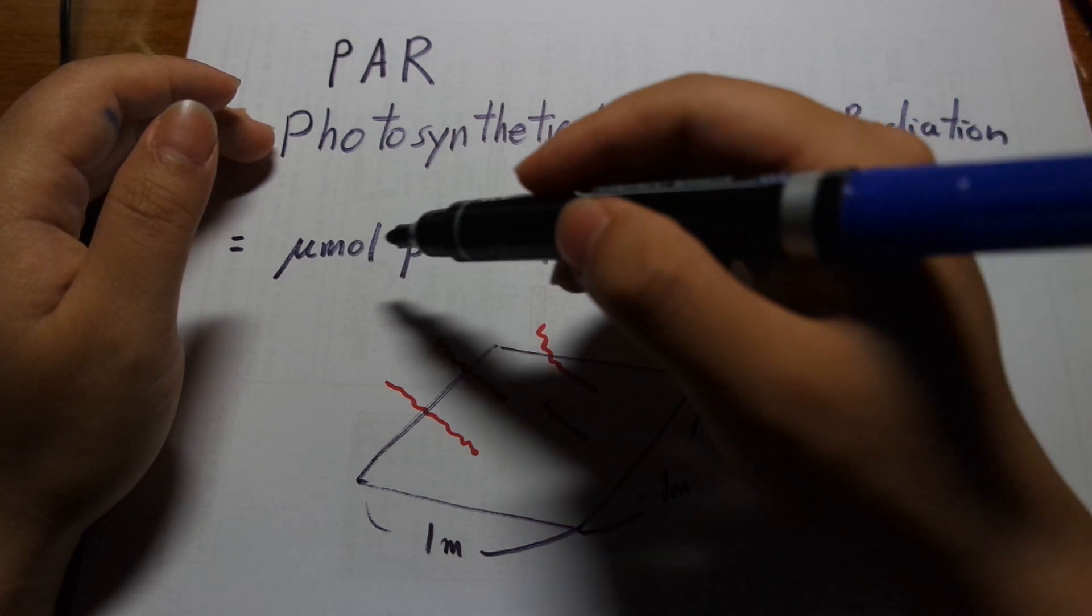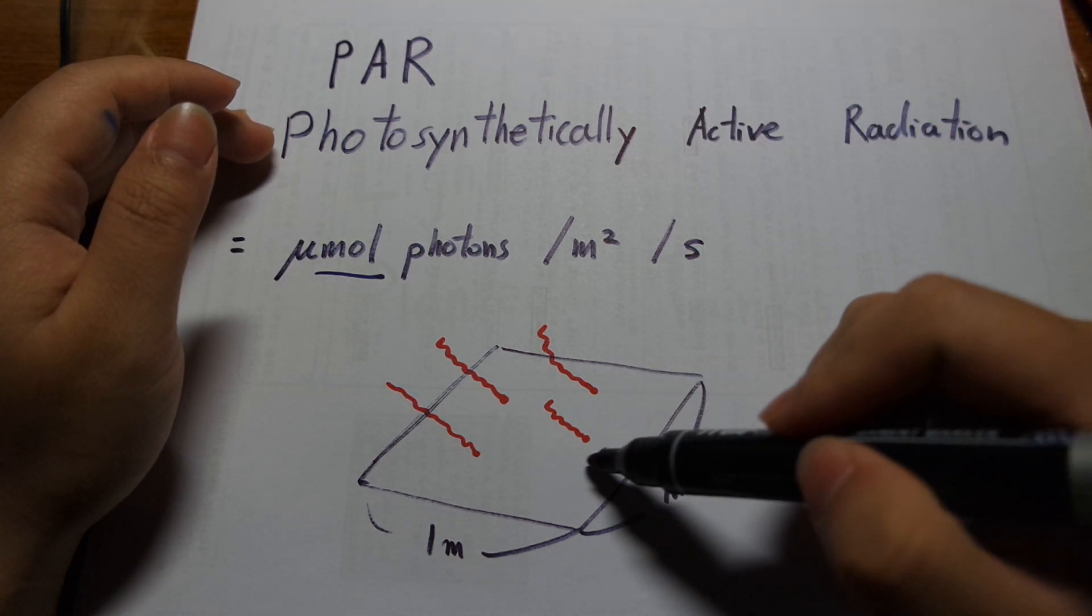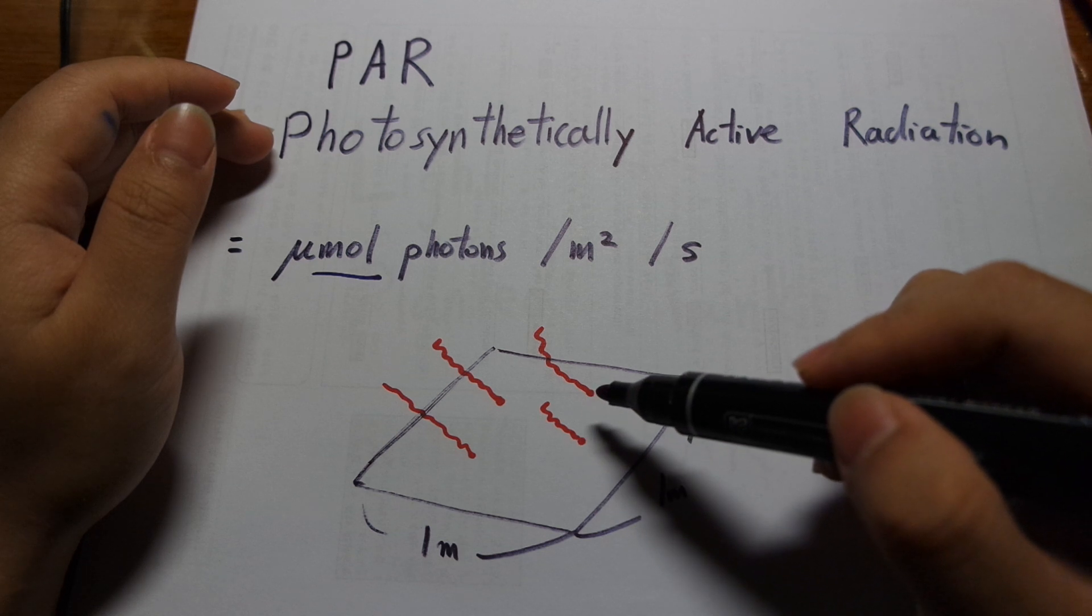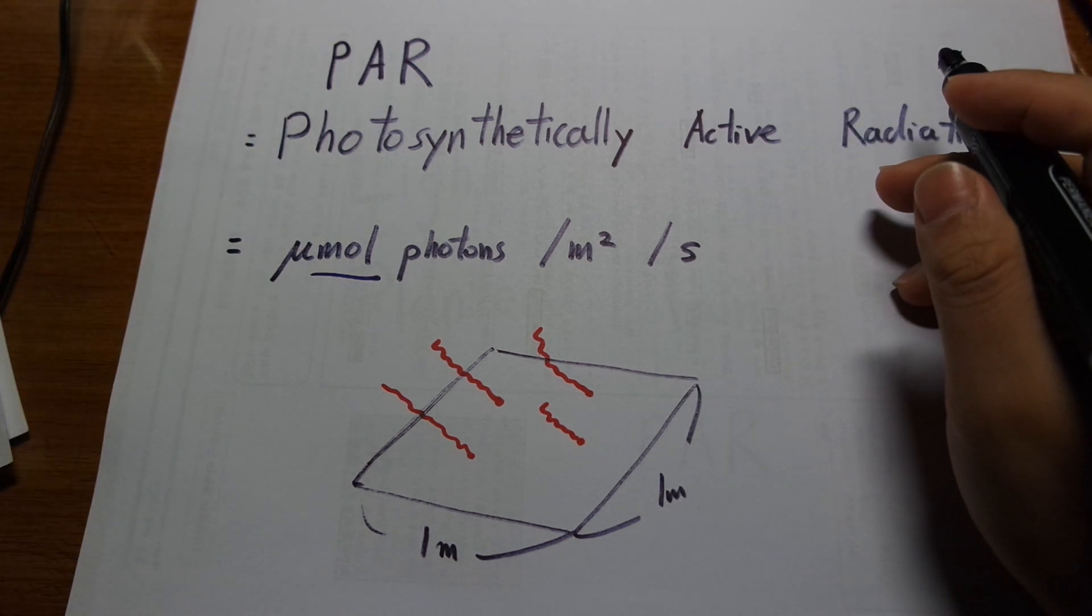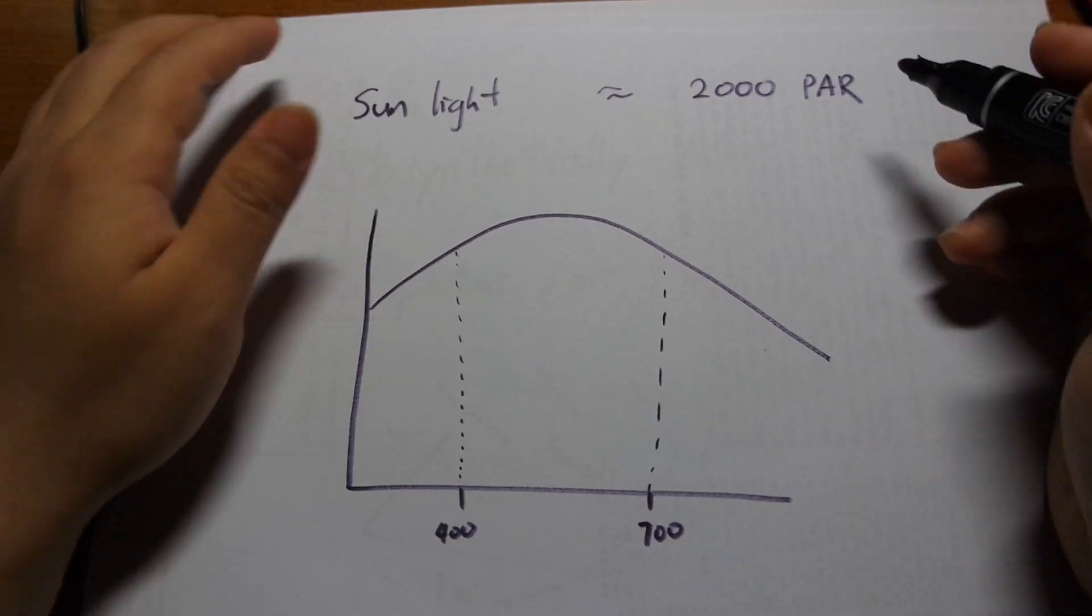So moles is a large number, so a certain number of photons hitting the surface per second is the PAR value. So that is the unit that is used to measure photosynthetically active radiation.